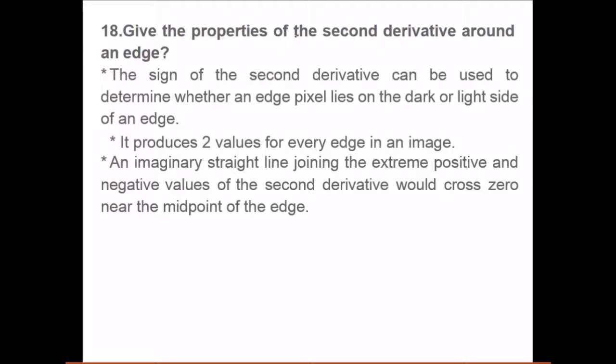Give the properties of the second derivative around an edge. The sign of the second derivative can be used to determine whether the edge pixel lies on the dark or light side of an image. The first derivative is for the slope; the second derivative is for knowing whether it belongs to one area or the second area. It produces two values for every edge, and an imaginary straight line joining the extreme positive and negative values would cross zero near the midpoint of the edge.